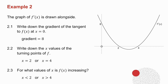Question 2.2 says: write down the x-values of the turning points of f. Remember, when you have a turning point on f you get an x-intercept on the derivative. So the x-intercepts of the derivative correspond to the turning points of f — the turning points occur at the two x-intercepts of the derivative.